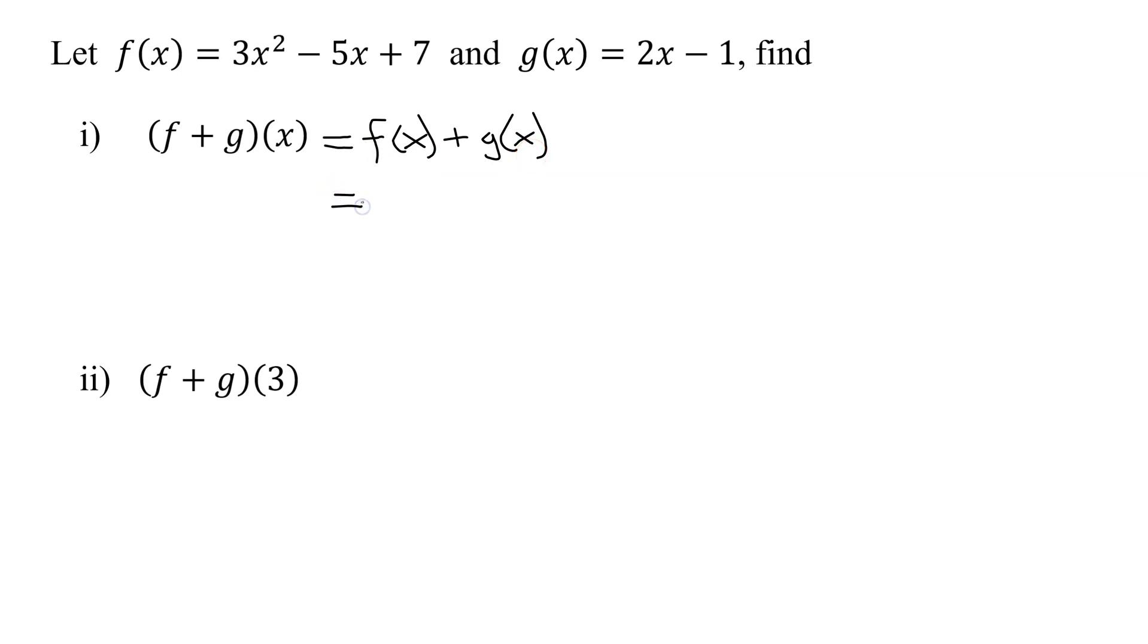So f(x) is just 3x² - 5x + 7. And then I have to add to that g(x), which is 2x - 1. So now I need to simplify this expression. Well, since there's an addition in between these two parentheses, there's nothing in front of this parentheses, do I really need these parentheses in there? No. So I can just rewrite this without any of the parentheses.